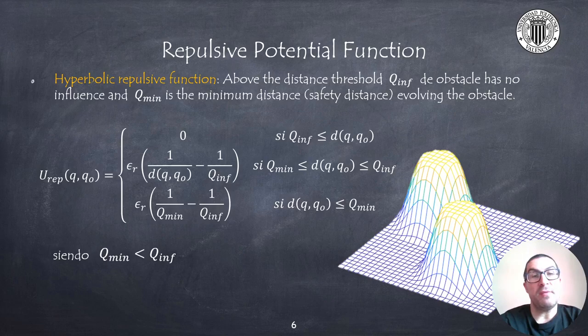The repulsive function is defined by two distances. The first is a distance beyond which the function has no influence on the robot, and second, a minimum safety distance to avoid the obstacle. On the other hand, the parameter epsilon r modifies how this repulsive function affects the robot.